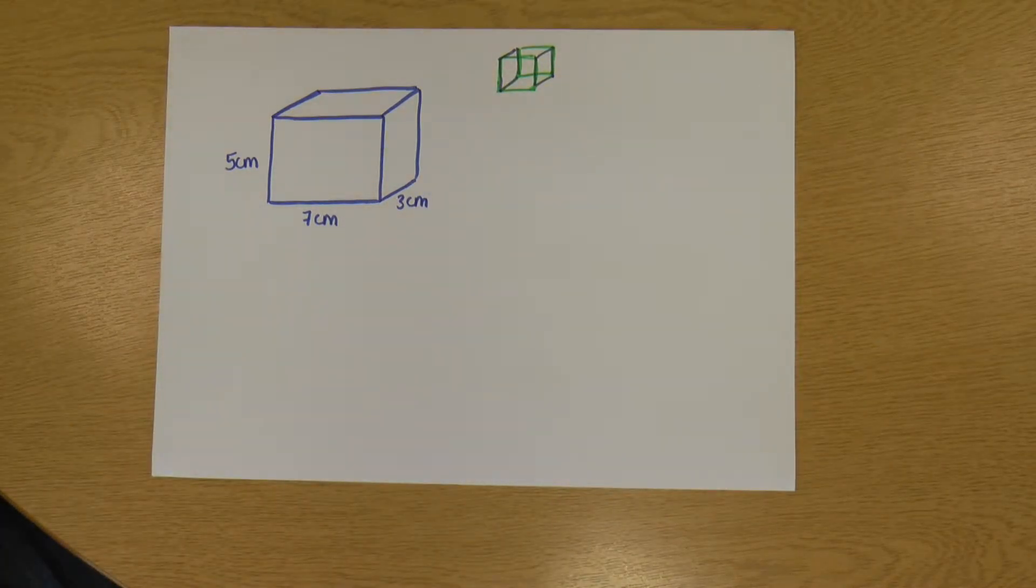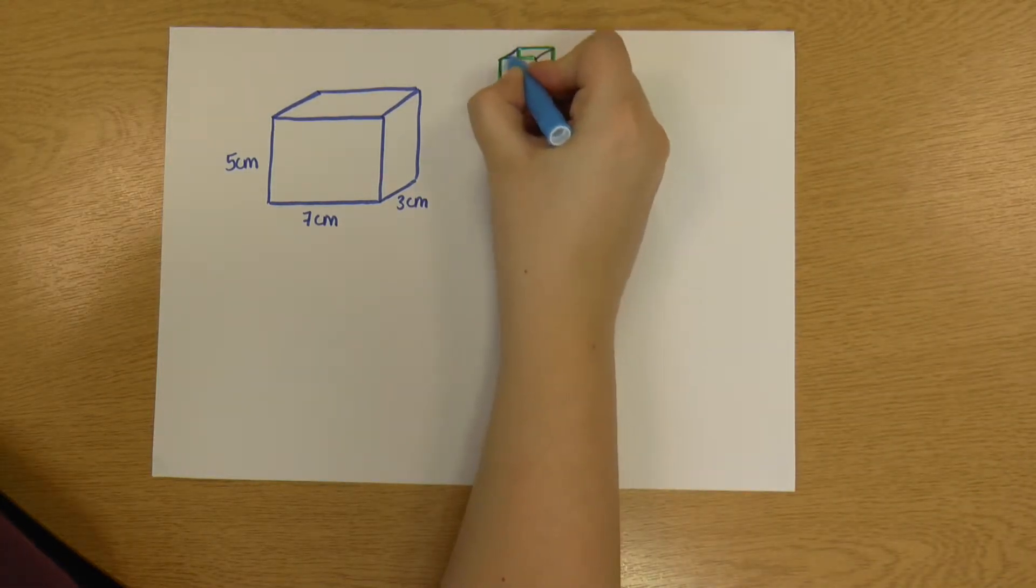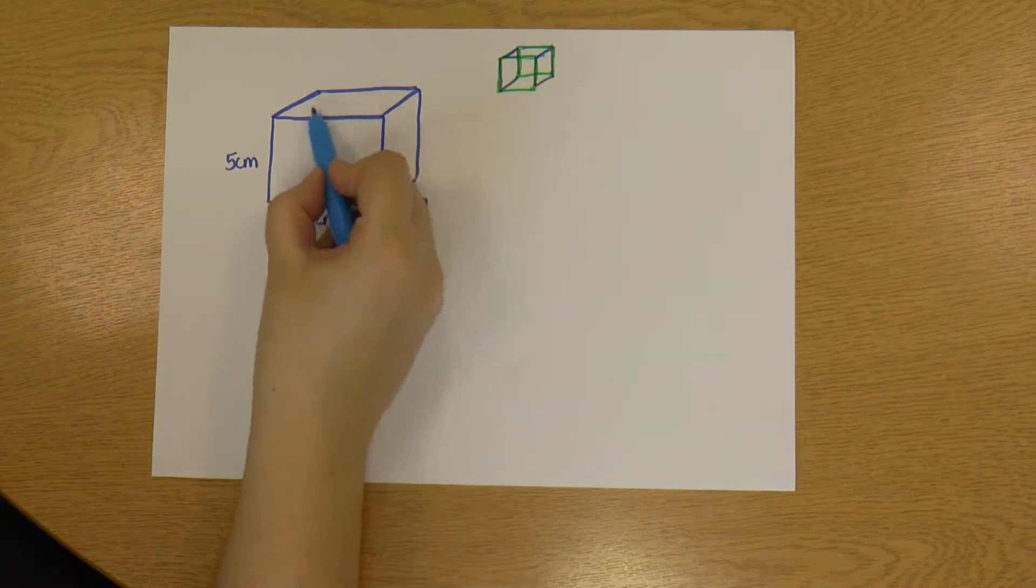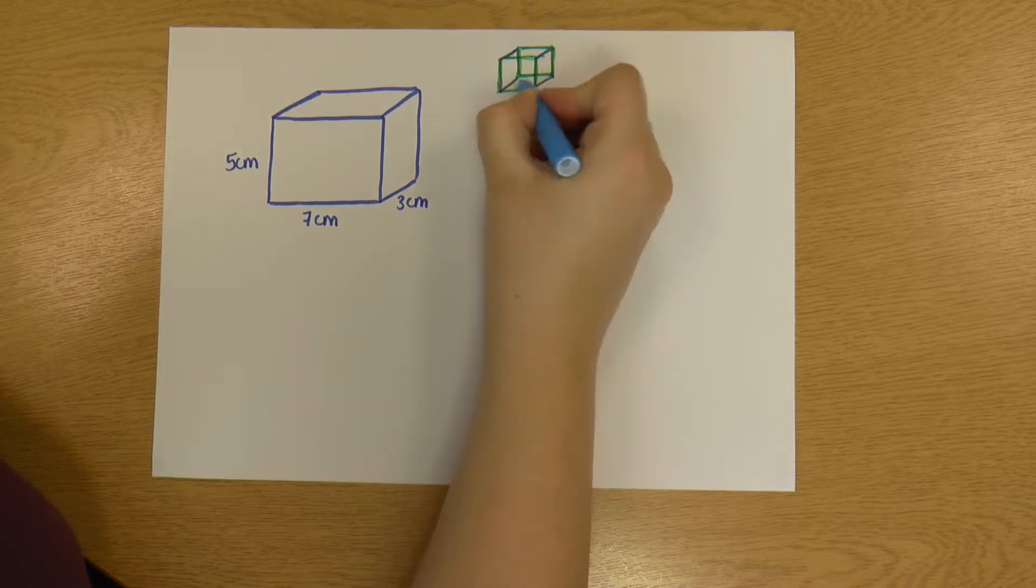And then, my final one, grab another color, is this top side, which is equivalent to this on the diagram, and the one opposite, the bottom side.